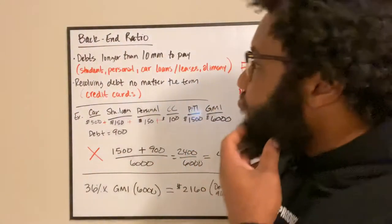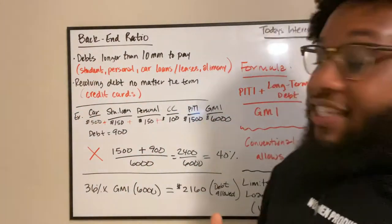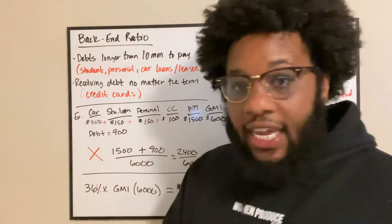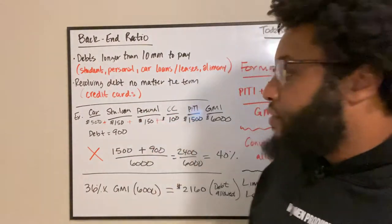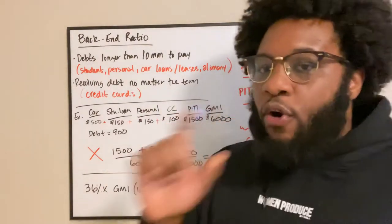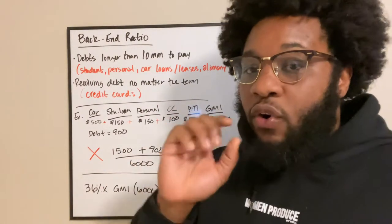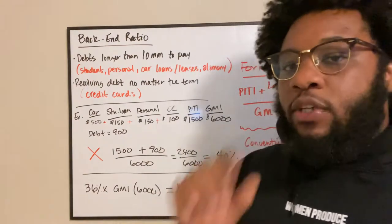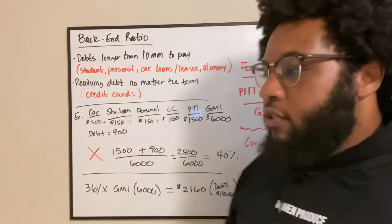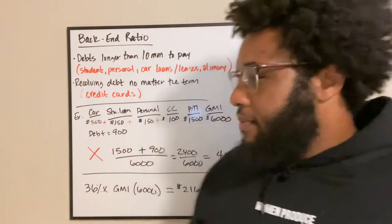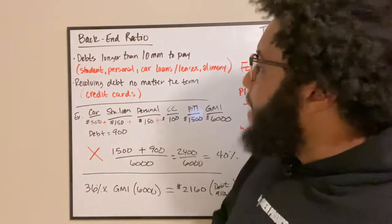So back-end ratio — what it consists of: your PITI, which is your principal, interest, taxes, and insurance — that mortgage payment that you're looking to pay for. For the sake of time, we're just going to revert back to the same amount we used yesterday in our example: $1,500 a month is what you're able to pay, and it covers everything.